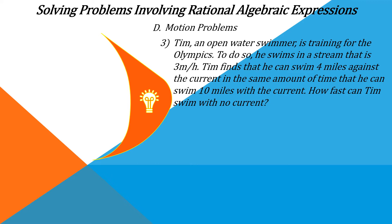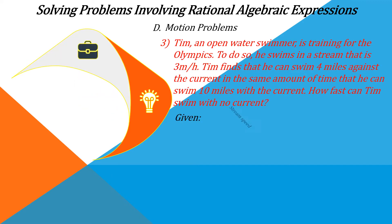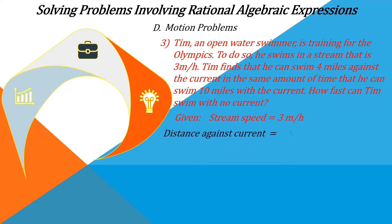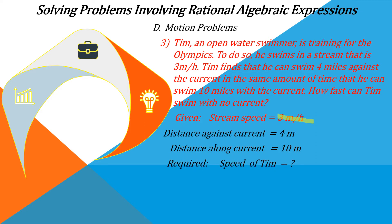Now, in solving worded problems, let's identify the given data first. Stream speed is equal to 3 miles per hour. Distance against current is equal to 4 miles. Distance along current is 10 miles. We are required to solve for the speed of Tim in miles per hour.